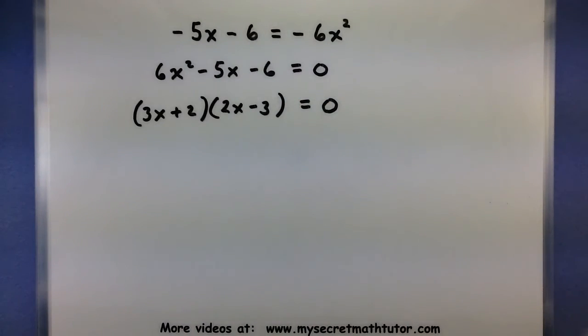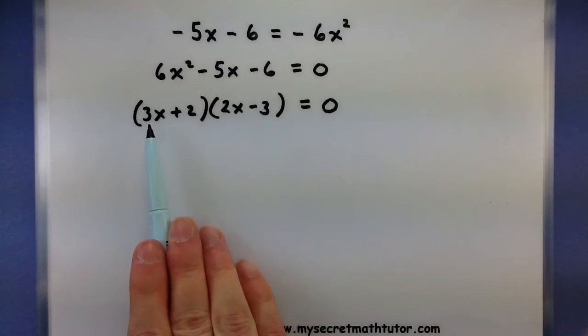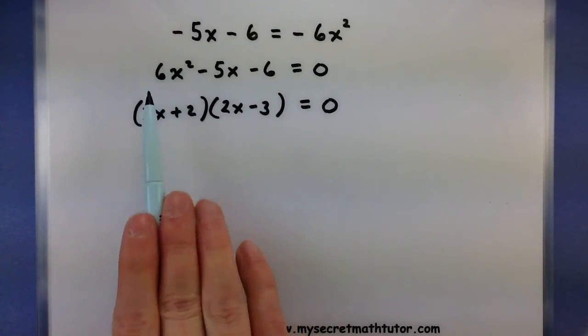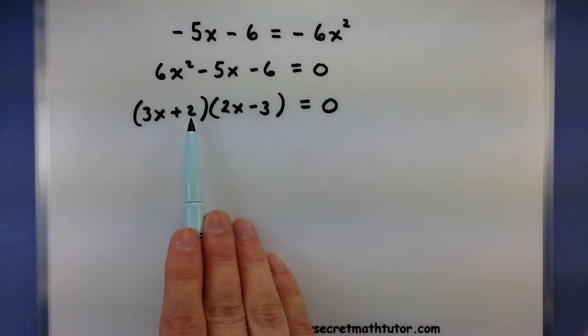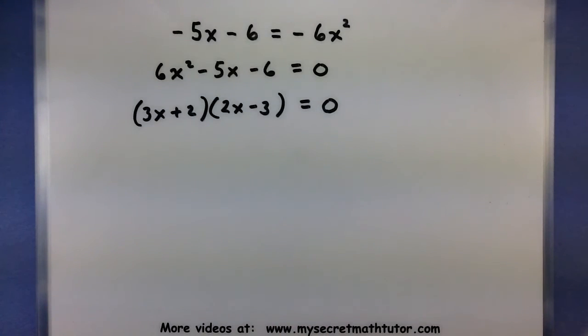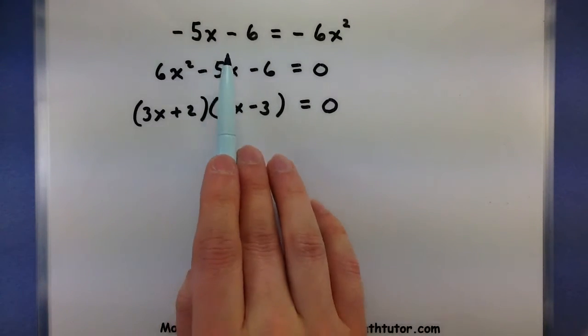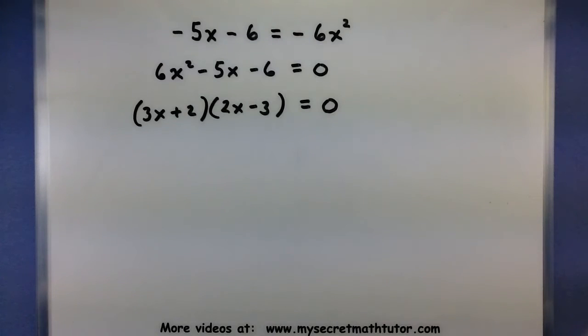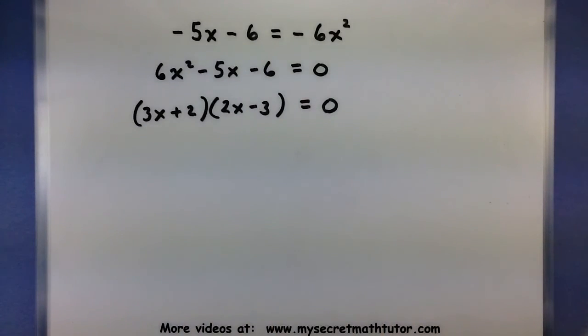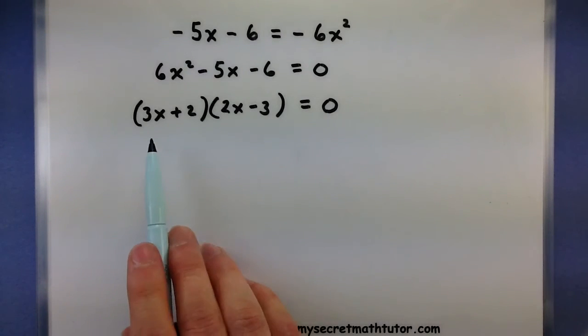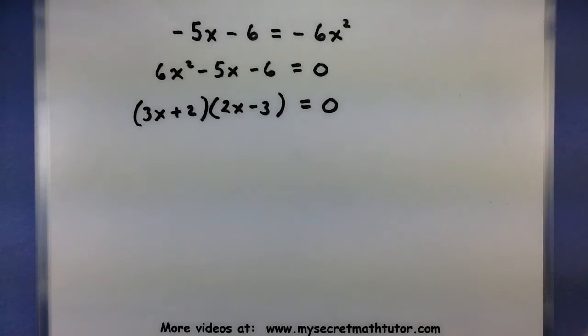Let's double check this just to make sure it factors correctly. So 3x times a 2x would give me a 6x squared. The outside term would be a minus 9x. The inside term would be a positive 4x. So those combine and would give me a negative 5x. The last two terms, positive 2 and negative 3, sure enough, multiply to be a negative 6. So these are my factors that the quadratic breaks down into.